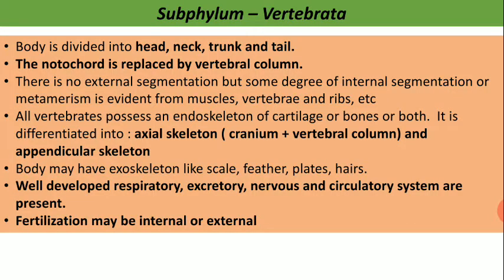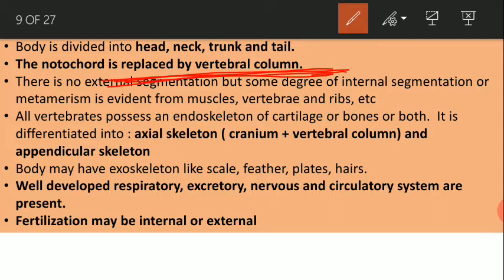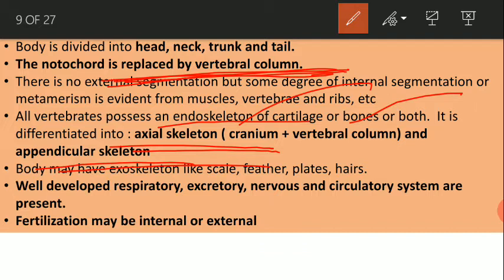Subphylum Vertebrata: vertebrates have head, neck, trunk and tail. Their notochord is replaced by the vertebral column — this is the main feature of vertebrates. Their endoskeleton has two parts: axial skeleton and appendicular skeleton. The axial skeleton contains the cranium and vertebral column. They have well-developed respiratory, excretory, nervous and circulatory systems. They have exoskeleton like scales, feathers, plates and hairs. They have no external segmentation but have internal segmentation, prominent in the muscles, vertebrae and ribs.